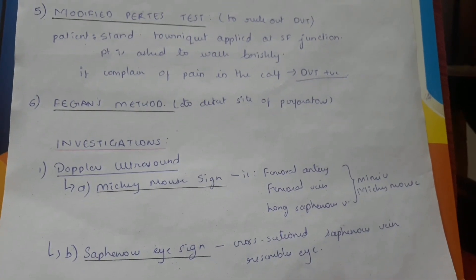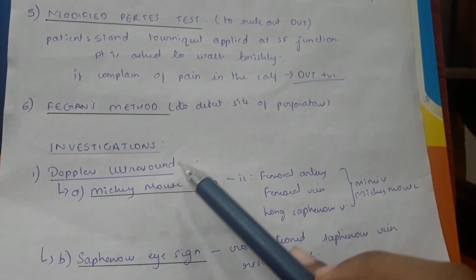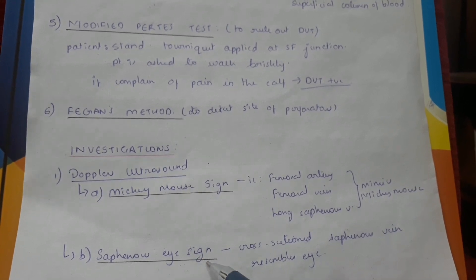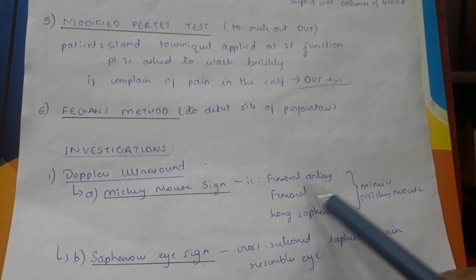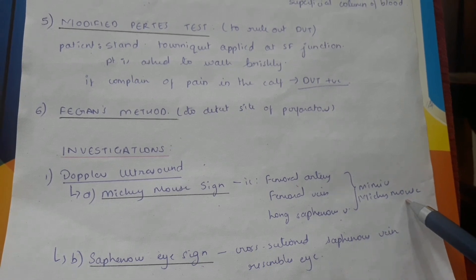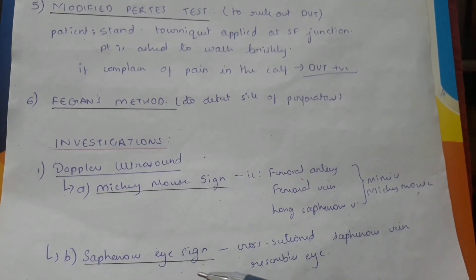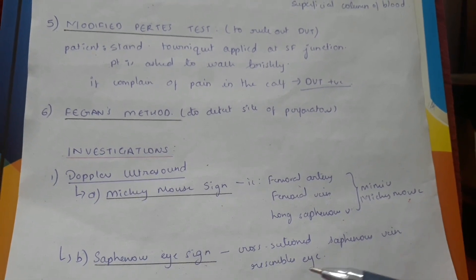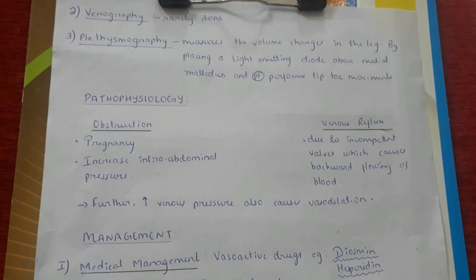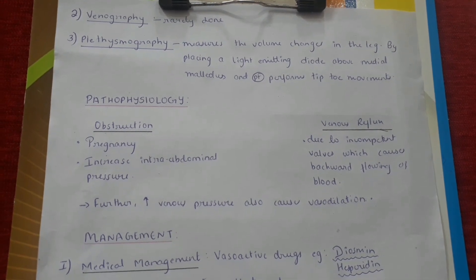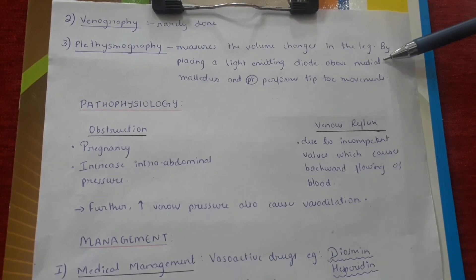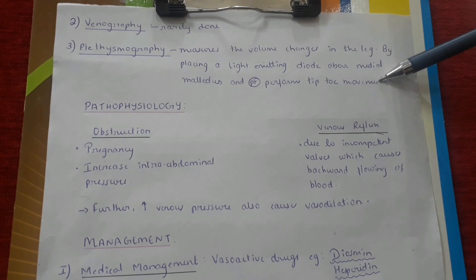Investigations: the first is Doppler's ultrasound. Under Doppler's ultrasound, two signs are checked — the Mickey Mouse sign and the Saphenous eye sign. In the Mickey Mouse sign, the femoral artery, femoral vein, and long saphenous vein mimic the shape of Mickey Mouse. In the Saphenous eye sign, the cross-section of the saphenous vein resembles an eye. Other investigations include venography, which is rarely done, and plethysmography, which measures volume changes in the leg by placing a light-emitting diode above the medial malleolus while the patient performs tiptoe movements.